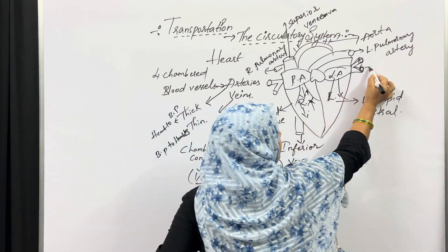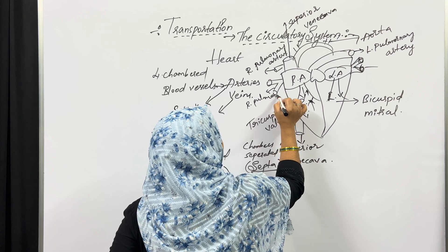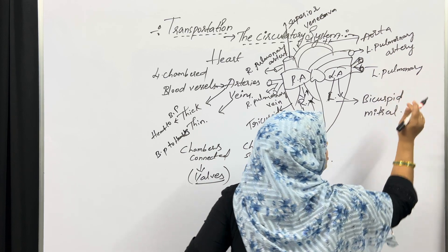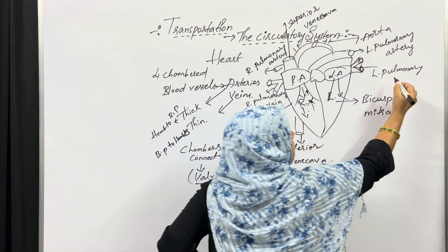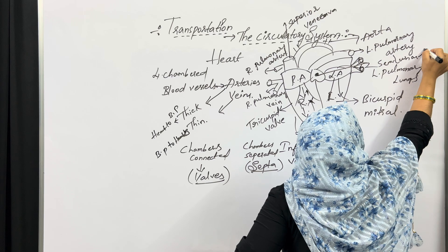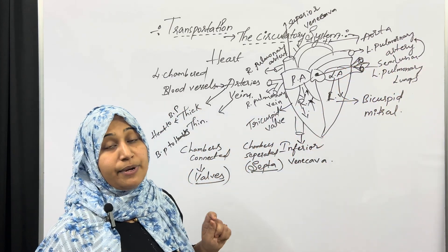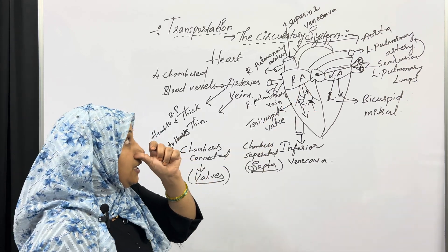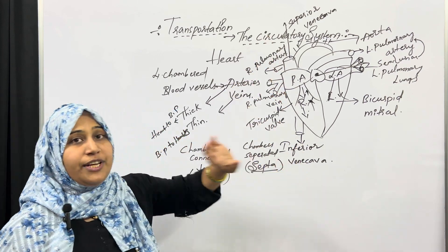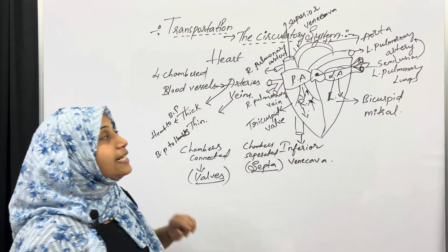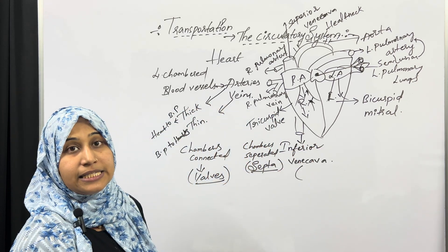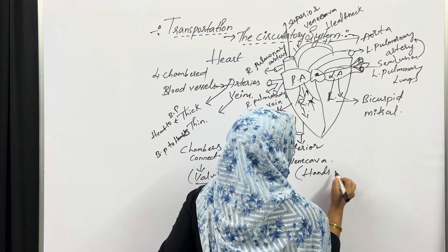There are two pulmonary veins: the right pulmonary vein and the left pulmonary vein, which carry blood back from the lungs to the heart. There is also a semi-lunar valve present in the pulmonary artery. The superior vena cava collects blood from the head and neck, while the inferior vena cava collects blood from the hands and legs.